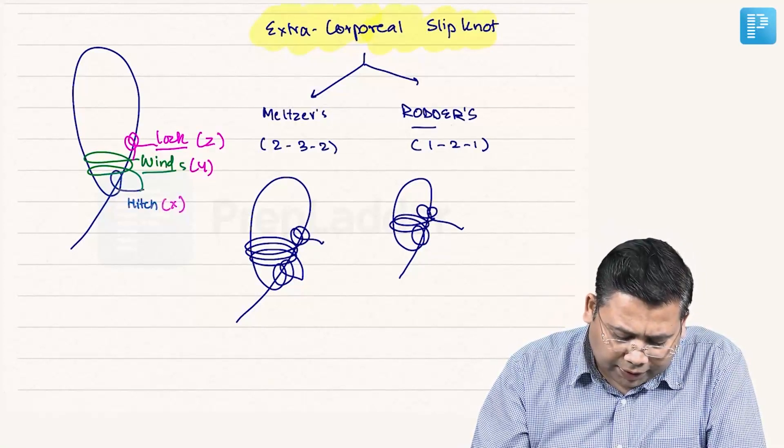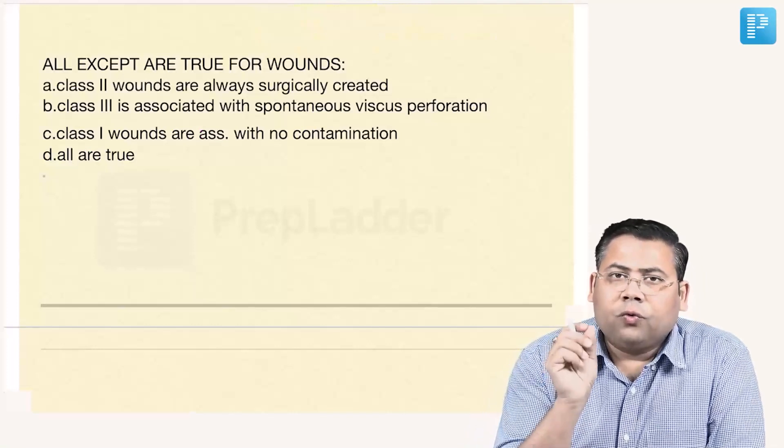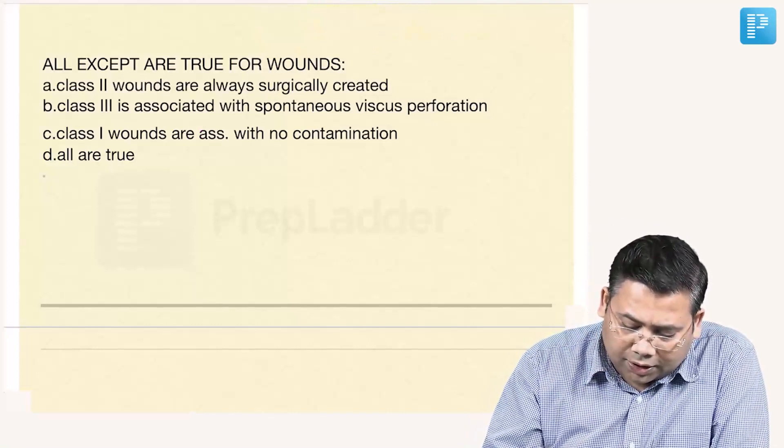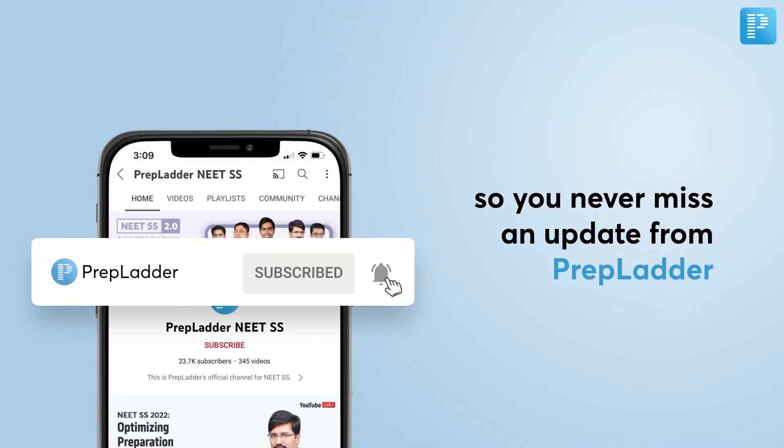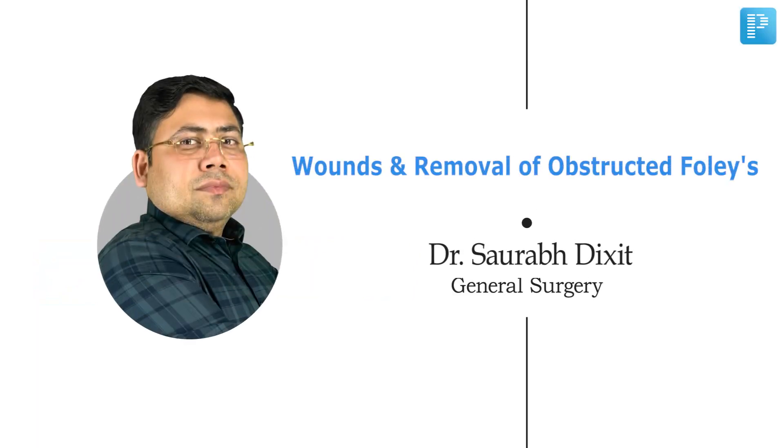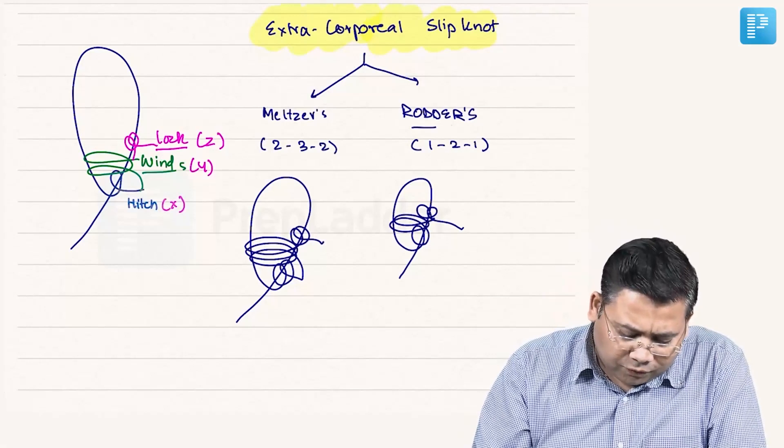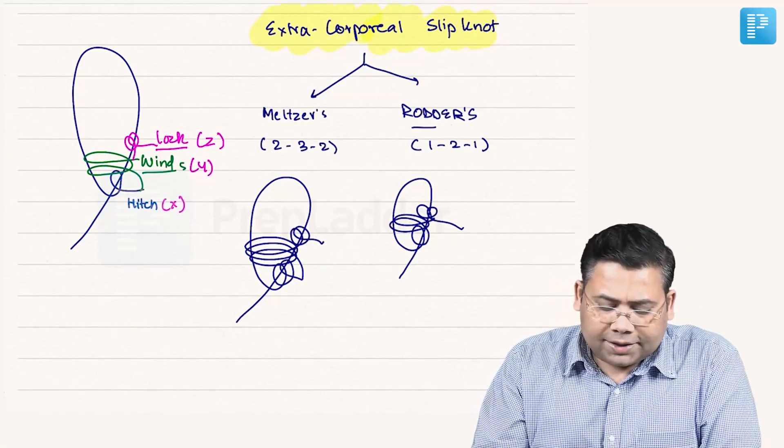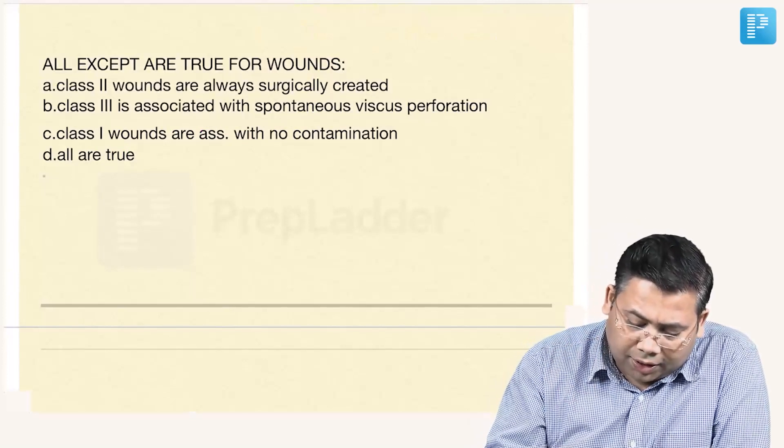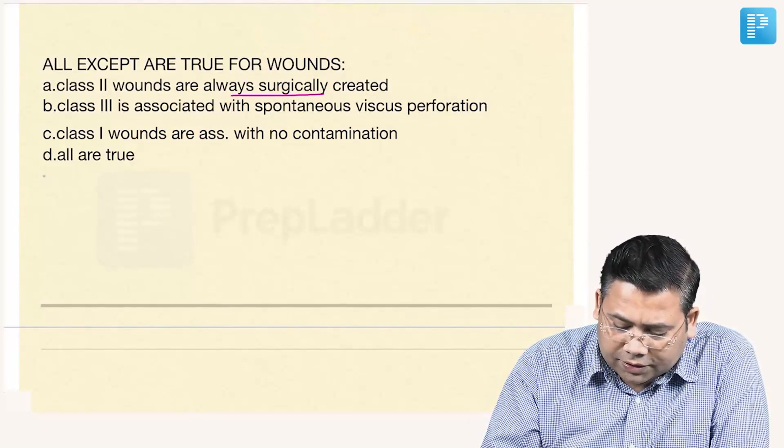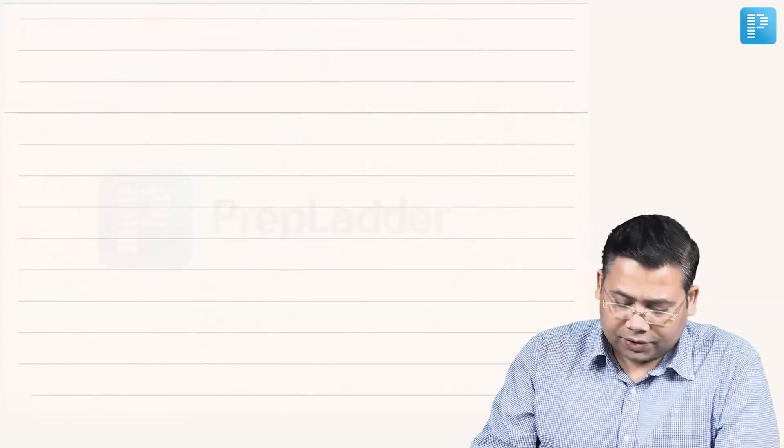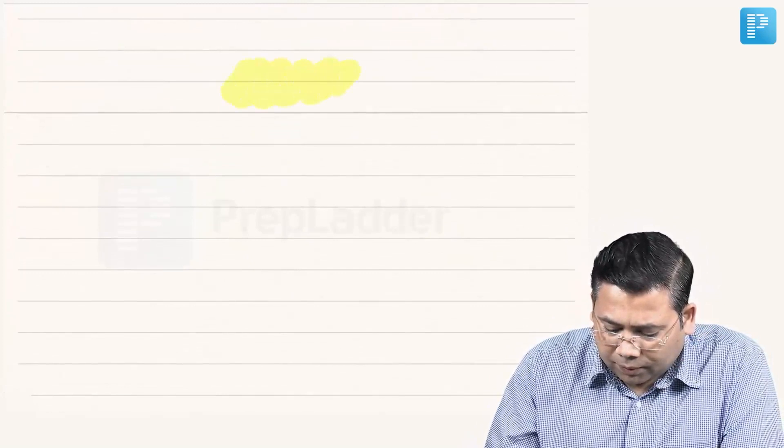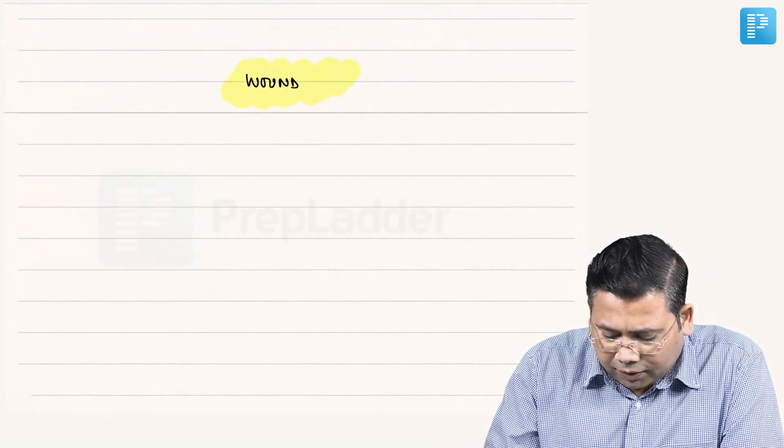Let us move forward to the next MCQ. All except are true for the wounds. Class 2 wounds are always surgically created. Let us quickly discuss this question.